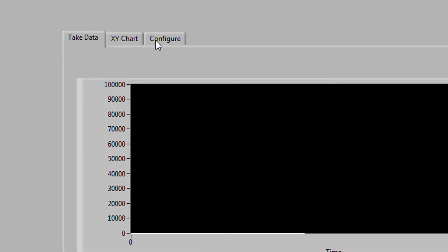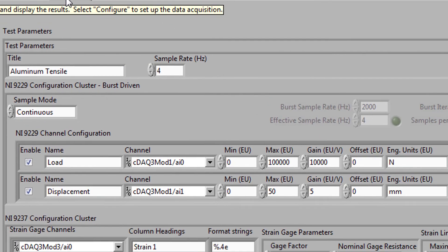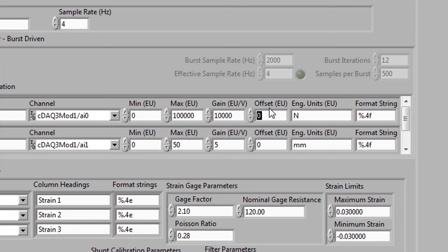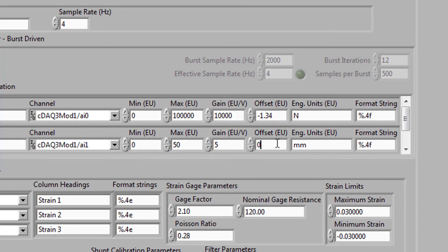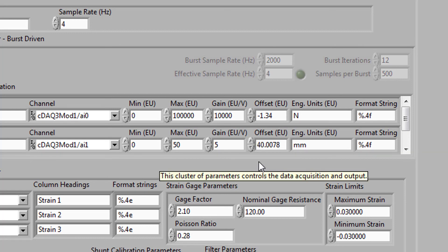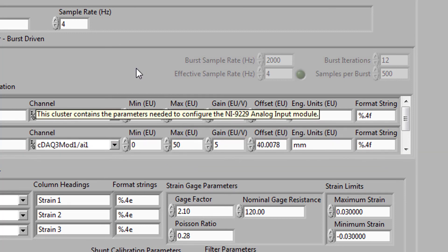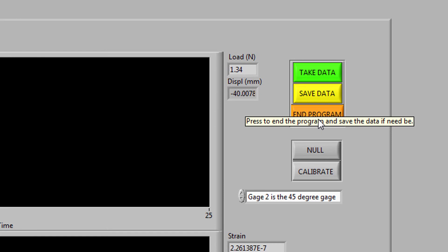Return to the Configuration panel. Now enter the load and position values as offsets but use the opposite sign to force a zero reading. Now return to the front panel and click Take Data. Load and position should now read about zero.